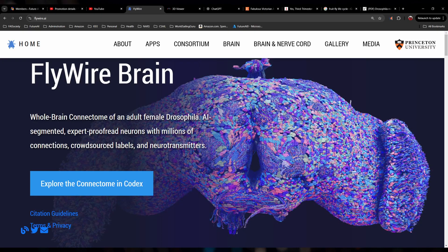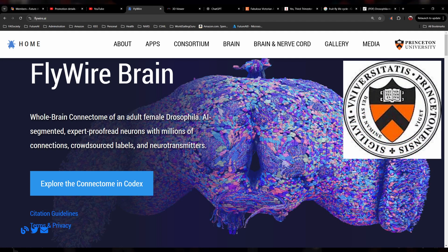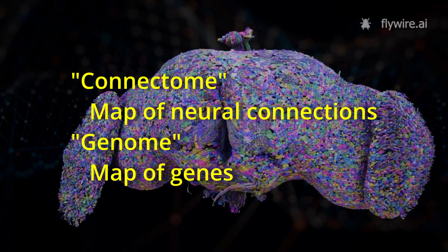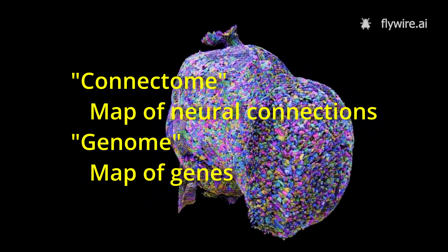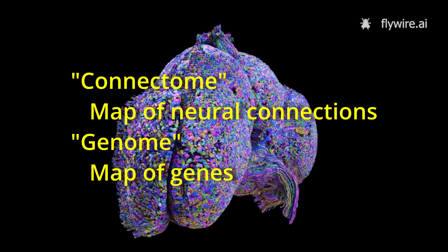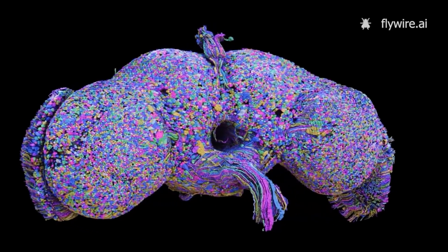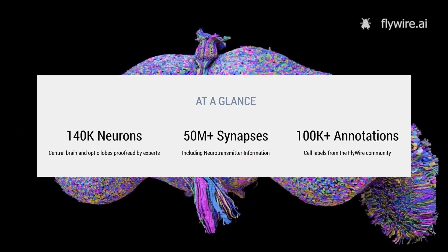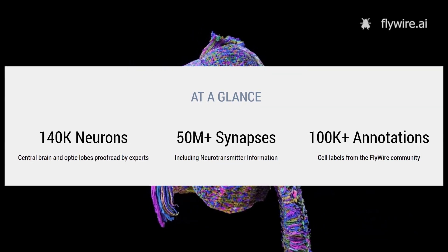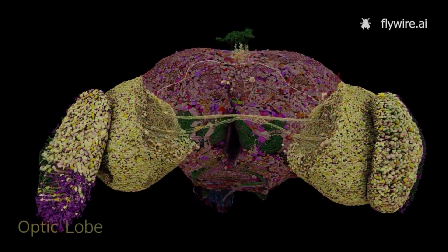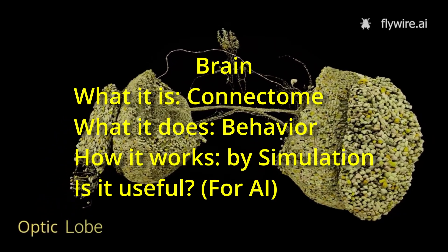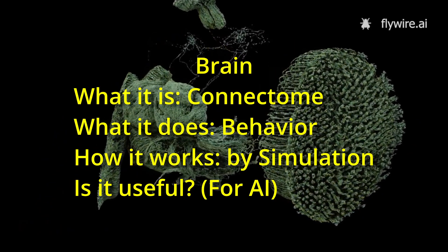The Flywire project is a worldwide consortium of researchers centered at Princeton University. They have mapped the entire connectome of the brain of the fruit fly. The connectome is a map of neurons and the synaptic connections between them — in the same way a genome is a map of the DNA or chromosomes of an organism. This monumental achievement of mapping 140,000 neurons and 50 million synapses yielded over a petabyte of data representing the fly's entire brain, a connectome of neurons connected by synapses.